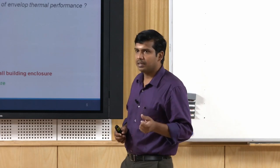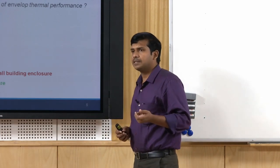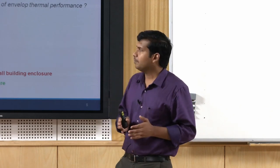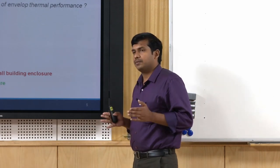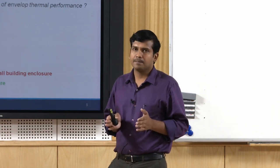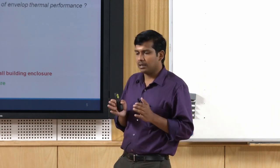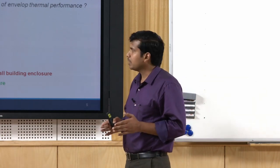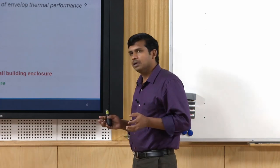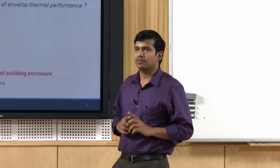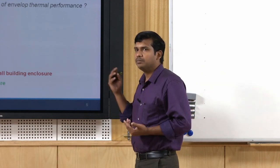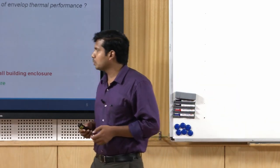The element level starts from the microstructure — it is an inherent property of the material. At the component level, for example, what is the thermal efficiency of a brick, a brick wall, a particular block, aerated concrete block, or an insulated system. The third level is the assembly level — when you have the whole wall system, you can assess the thermal efficiency as a whole. We will look at the merits and demerits more closely today.